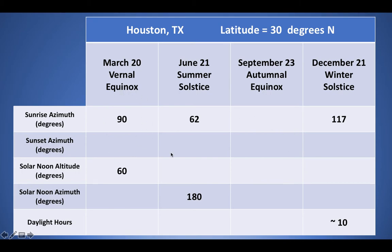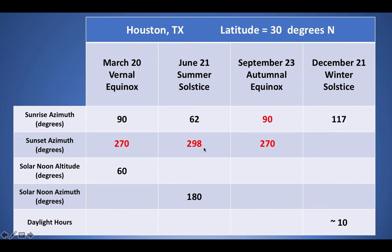Starting with the vernal equinox: the sunrise azimuth is 90 degrees due east, and the sunset azimuth is 270 degrees due west — always rises due east, sets due west. These two numbers sum to 360. The autumnal equinox is exactly the same — that whole column is the same path. For the June and December solstices, the sunset azimuths are calculated by subtracting from 360: 360 minus 62 gives 298 for the summer solstice sunset, and 360 minus 117 gives 243 for the winter solstice sunset. Both pairs sum to 360. That completes the sunrise and sunset azimuths for Houston, Texas.